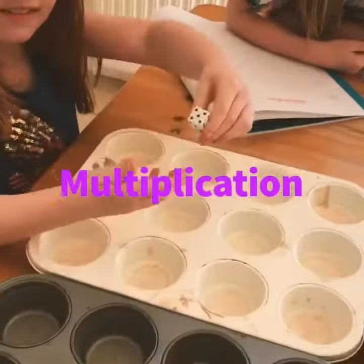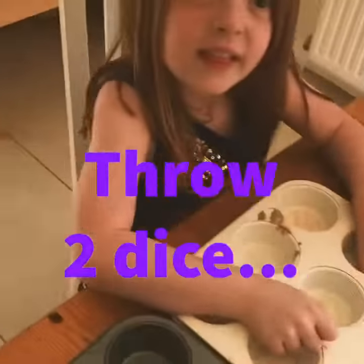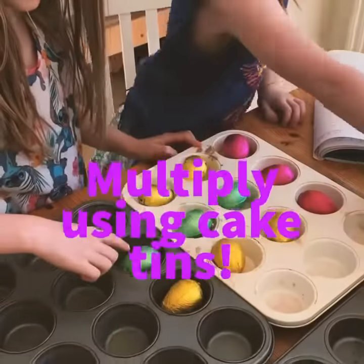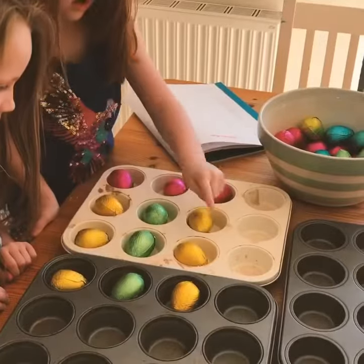We're going to use dice to create some multiplications. Three! Four! Okay, so we're going to do three times four. Three groups of three. Four groups of three, done. Fantastic. Twelve.